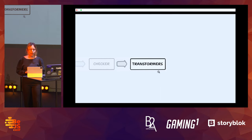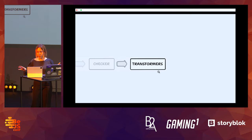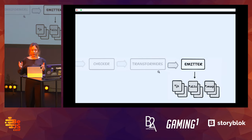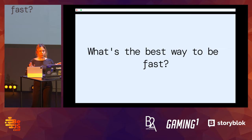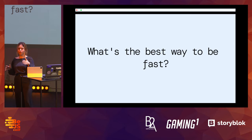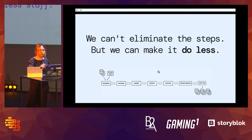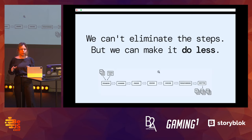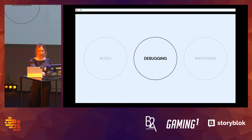Once this is ready, we have Transformers, which take the AST and — if we want JavaScript code — strip all the type information, or if we want declarations, strip all the JavaScript code. Finally, we have the Emitter, which emits the files we requested. Those were all the steps, some more expensive than others. The best way to be fast? Do less. With the TypeScript compiler we can't eliminate the steps, but we can make it do less. Now I'm going to show you how to debug it so we know where and how to optimize our code.